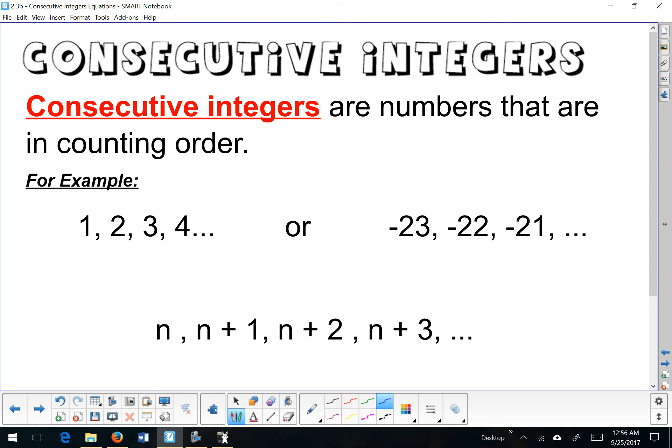Consecutive integers are numbers that are in a row or are increasing by 1 each time. Each time that I go up to the next integer, I'm adding 1 to the value before. So if I want to go up from 1, plus 1 is 2, 2 plus 1 is 3, 3 plus 1 is 4. The same is true even if you're a negative integer. Negative 23 plus 1 is negative 22, and so on.